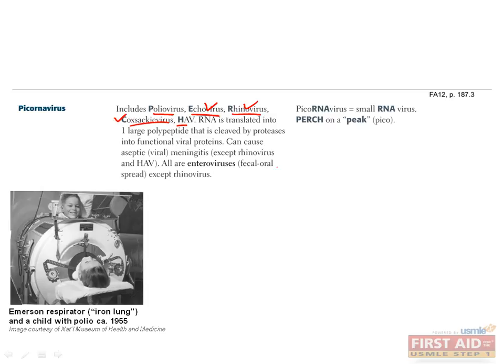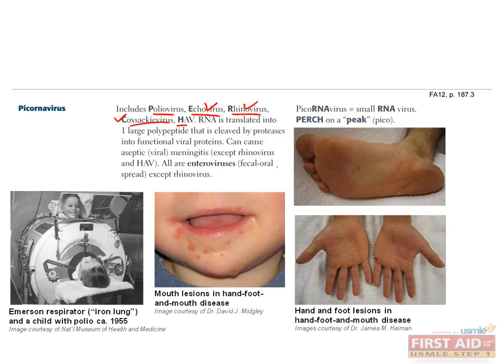Coxsackievirus is the most common cause of meningitis, far outweighing bacterial causes. There are two forms: Coxsackie virus A and B. Coxsackie virus A is responsible for herpangina, hand-foot-mouth disease, and acute hemorrhagic conjunctivitis. Herpangina is a painful blistering infection of the mouth that usually affects children. Hand-foot-mouth disease also commonly affects children and is characterized by fever, followed by sore throat, loss of appetite, and malaise; painful sores appear in the mouth and throat, then on the hands and feet. Characteristic lesions of the hand, feet, and mouth are shown here. Coxsackie B virus is responsible for encephalitis, cardiomyopathy, and aseptic meningitis.